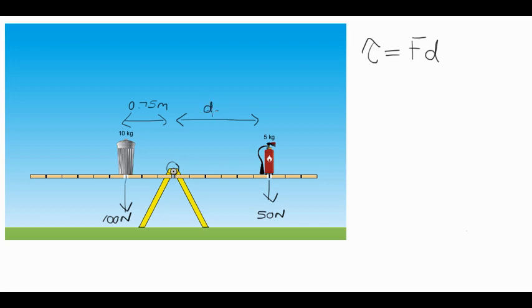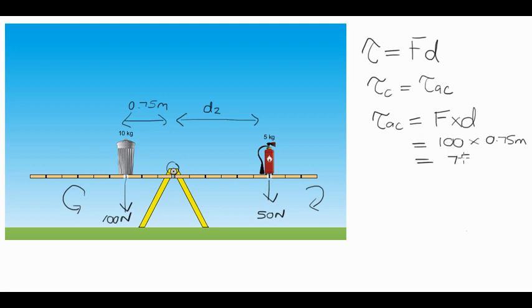So if the object is at equilibrium then the torques clockwise have to equal the torques anti-clockwise. This rubbish bin is going to make the seesaw want to rotate in an anti-clockwise direction. The fire extinguisher is going to make the seesaw want to rotate in a clockwise direction. If those two torques balance then there'll be no net torque and the seesaw will remain balanced. First of all let's look at the torques in the anti-clockwise direction. Torque anti-clockwise is equal to force times distance in the anti-clockwise direction. The force is the rubbish bin which is 100 newtons, the distance is 0.75 meters, which means we're going to get a torque of 75 newton meters.